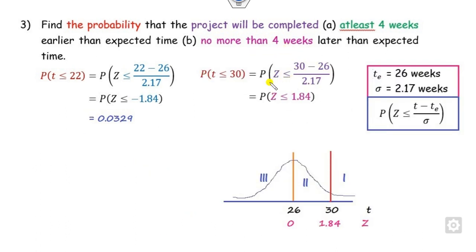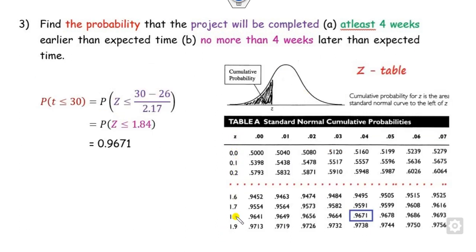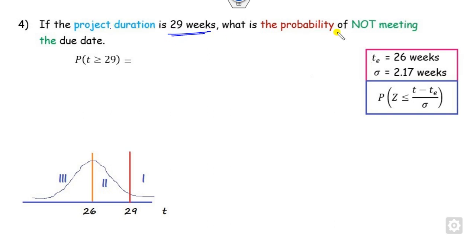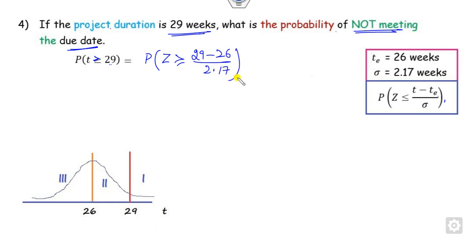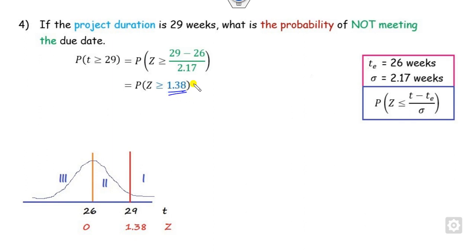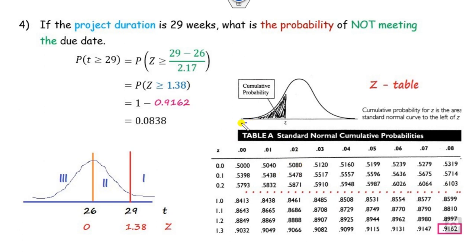For the second part — no more than 4 weeks later than 26 — the target is 30 weeks, so we need P(T ≤ 30). Converting: Z = (30 − 26) / 2.17 = +1.84. From the Z-table, Z = 1.84 gives the answer directly. For the third question — if the project duration is 29 weeks, what is the probability of not meeting the due date — that means P(T > 29). Converting: Z = (29 − 26) / 2.17 = 1.38. The probability of not meeting is 1 − P(Z < 1.38) = 1 − 0.9162 = 0.0838.